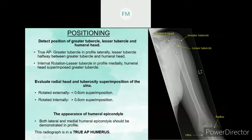If the patient has been rotated internally, the lesser tuberosity will be in profile medially, and the humeral head will be superimposed with the greater tuberosity. Next, to determine whether the position is correct, we evaluate the radial head and tuberosity superimposition with the ulna. If the patient has been rotated externally, it will be less than 0.6 cm superimposition.